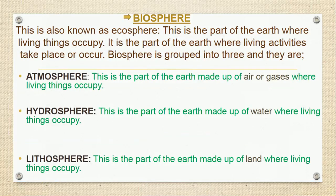Now let's look at ecological concepts. The first is biosphere. The biosphere is also known as the ecosphere. It is the part of the earth where living things occupy — the part of the earth where living activities take place. Any part of the earth where we can find life is called the biosphere. The biosphere is grouped into three parts.